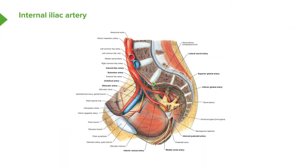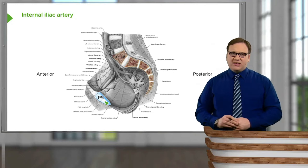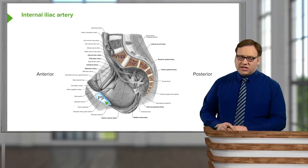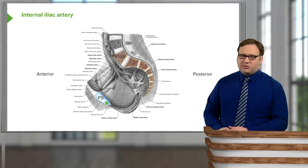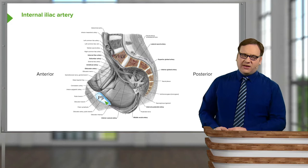Looking at the general arrangement of the branches of the internal iliac, on screen we can see a hemisected pelvis with the organs removed — just a right hemisected pelvis. We can see the posterior and anterior aspects, the sacrum, the fifth lumbar vertebra, and the pubic symphysis. Running down through the abdomen was the abdominal aorta, giving rise to unpaired visceral branches supplying the foregut, midgut and hindgut: the celiac trunk, superior mesenteric artery and inferior mesenteric artery.